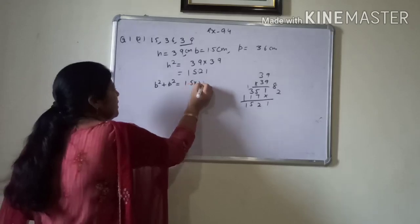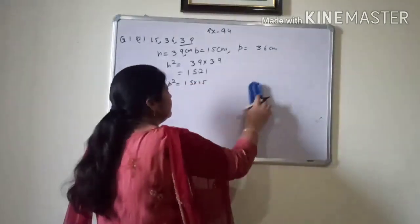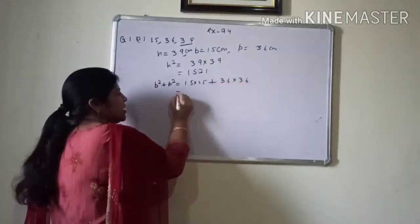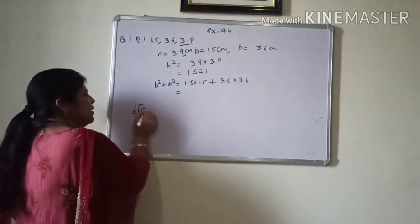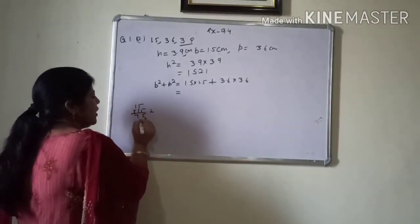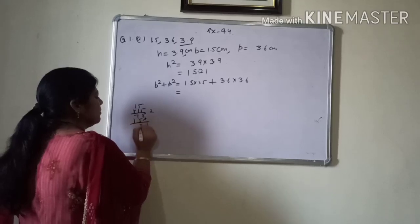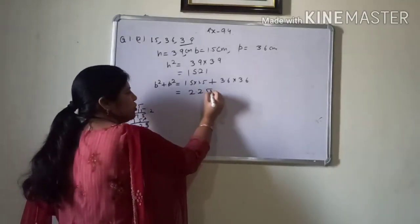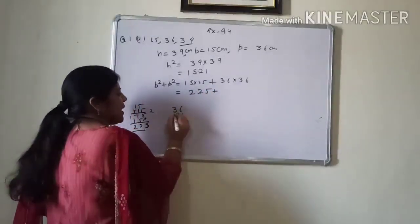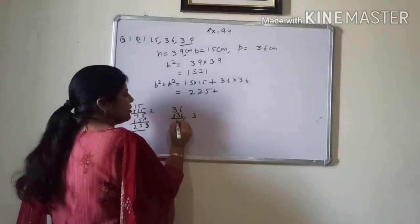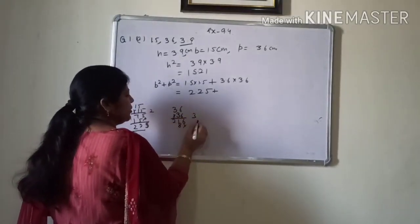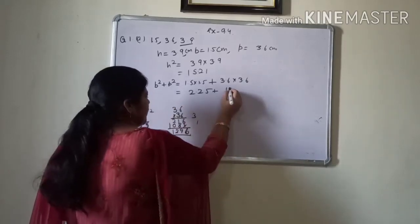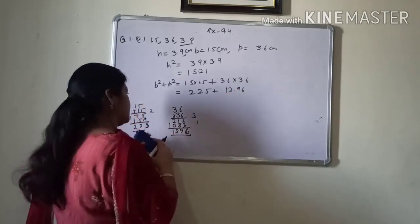Now, I am taking p square plus b square. p means 1.5 into 1.5. b means 3.6 into 3.6. Multiply 15 by 15, you will get 2.25. Multiply 36 by 36, you will get 12.96.